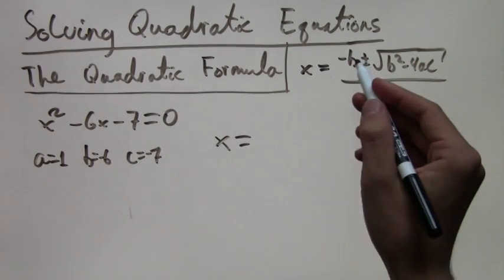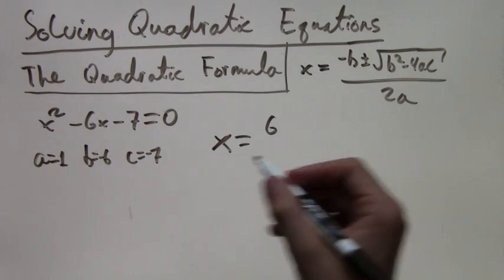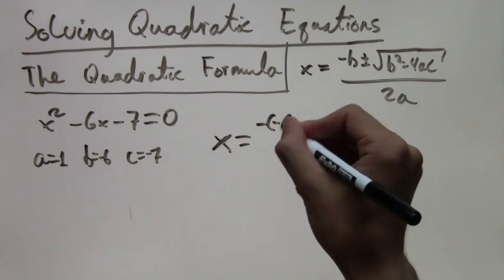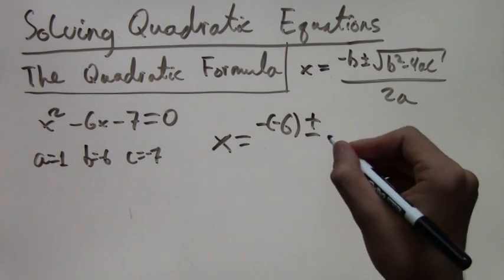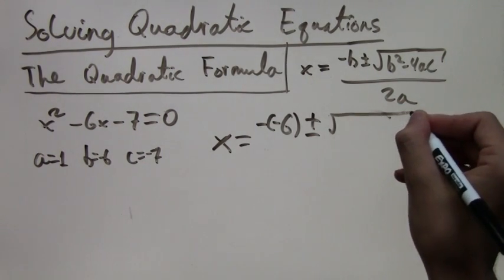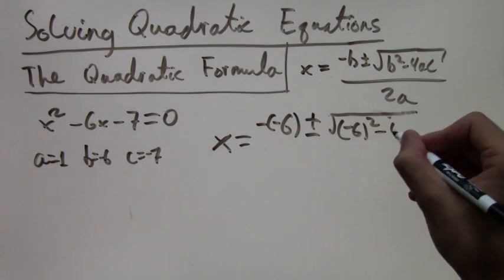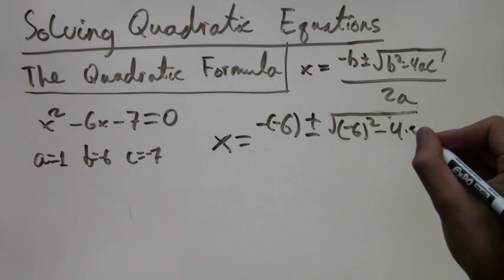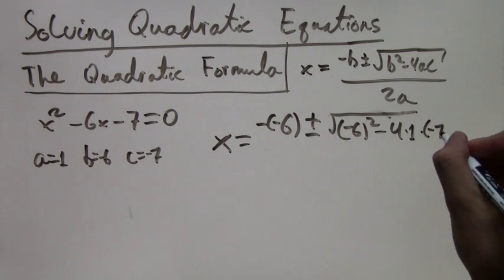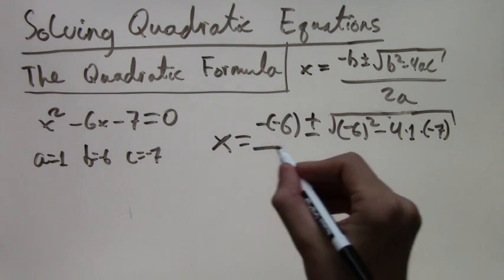So x equals negative negative 6, which is just positive 6. We'll simplify it later. Plus or minus the square root of negative 6 squared minus 4 times 1 times negative 7. And then all over 2 times 1.